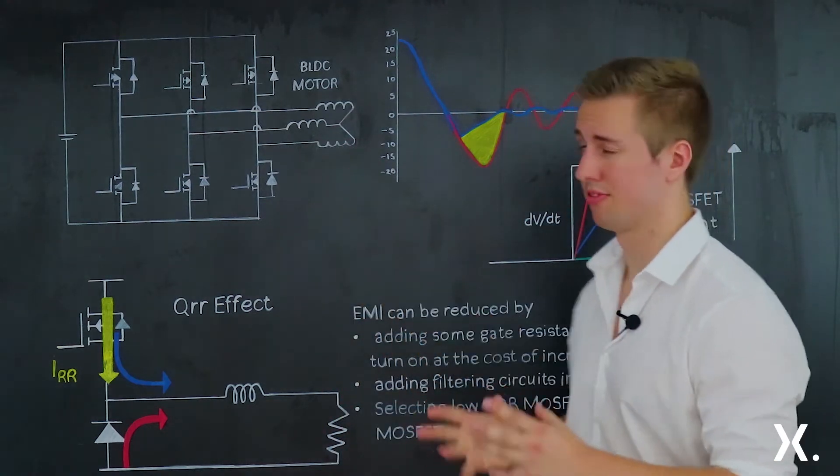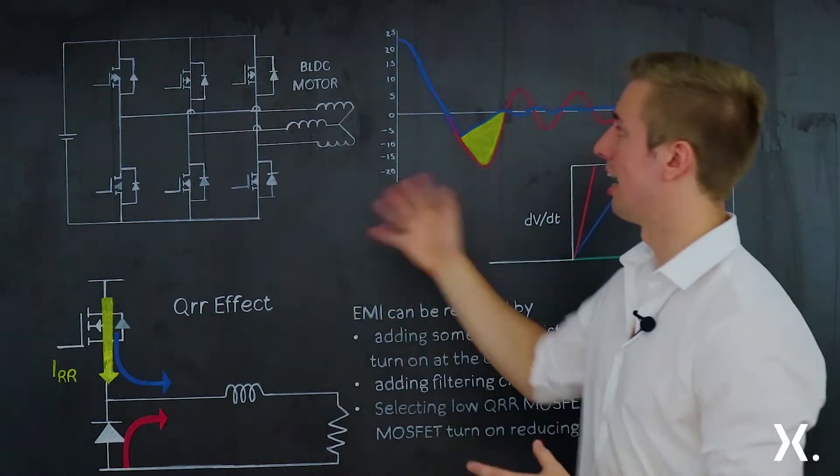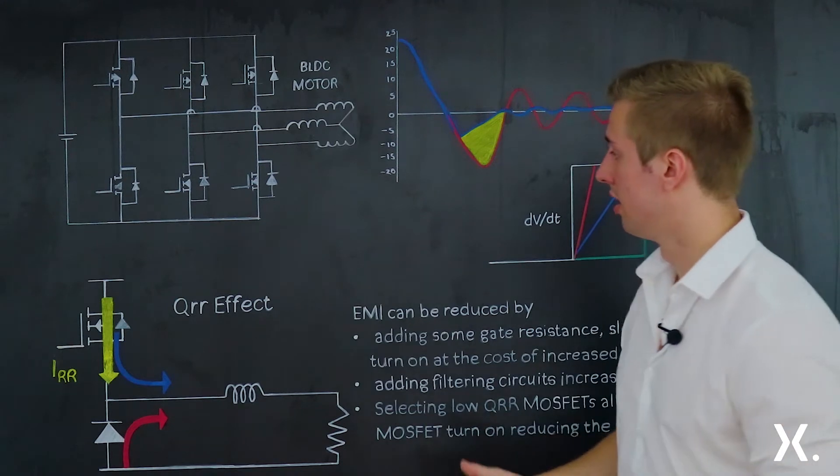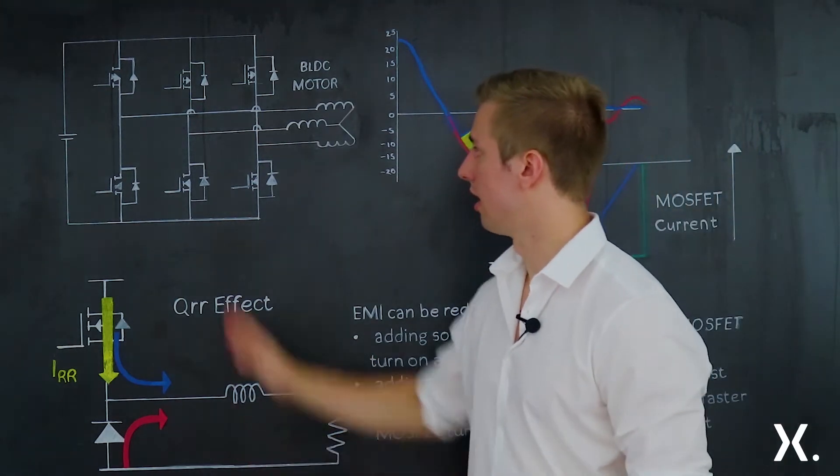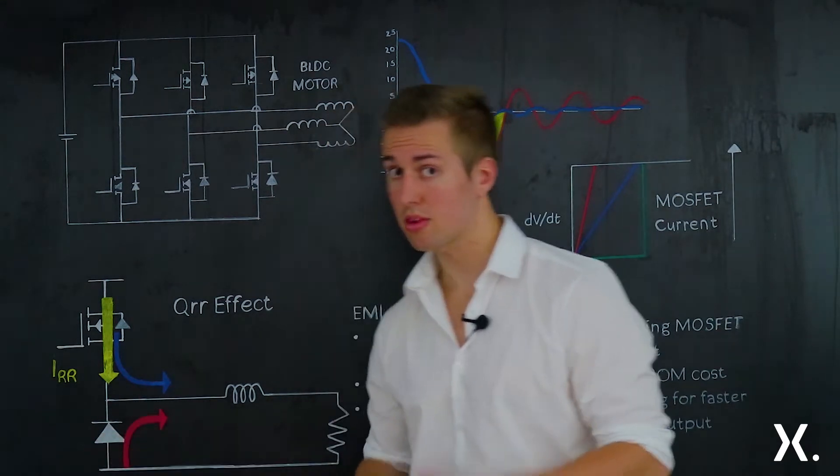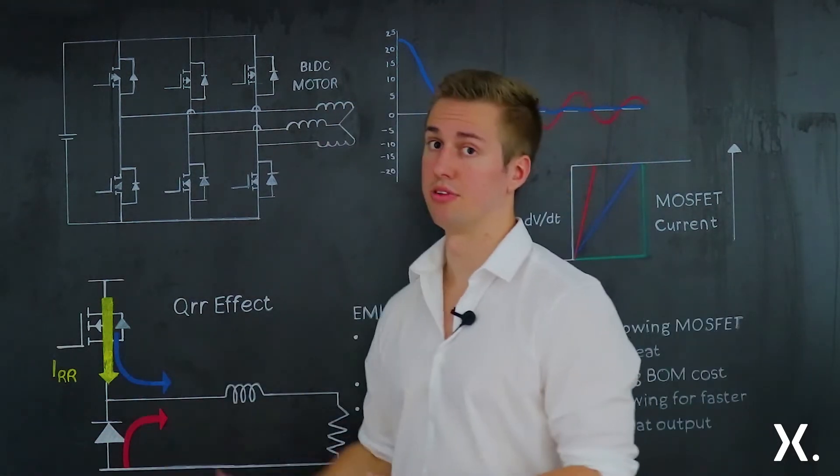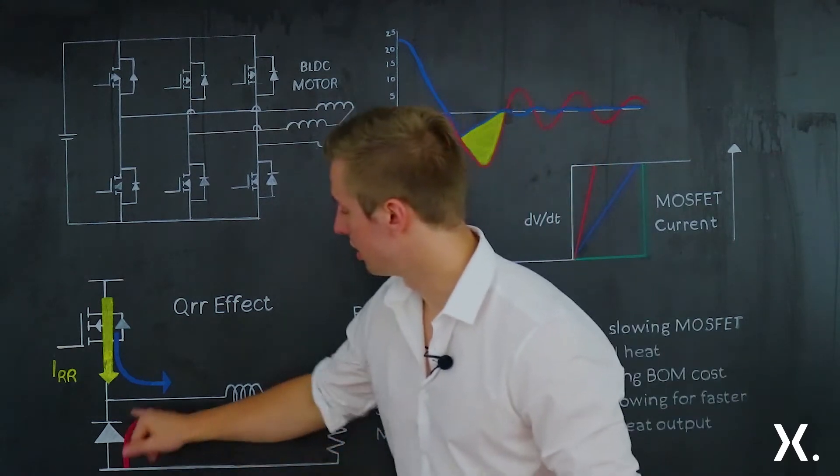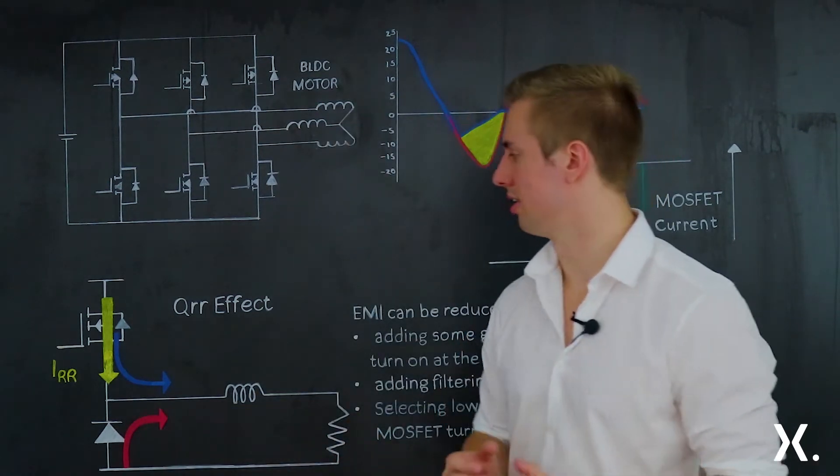This circuit itself is fairly hard to analyze as is, so what we've done is we've simplified it, taken one phase and even taking off the low side MOSFET, leaving the body diode. The reason for this is that the body diode is the only parameter we're actually interested in.